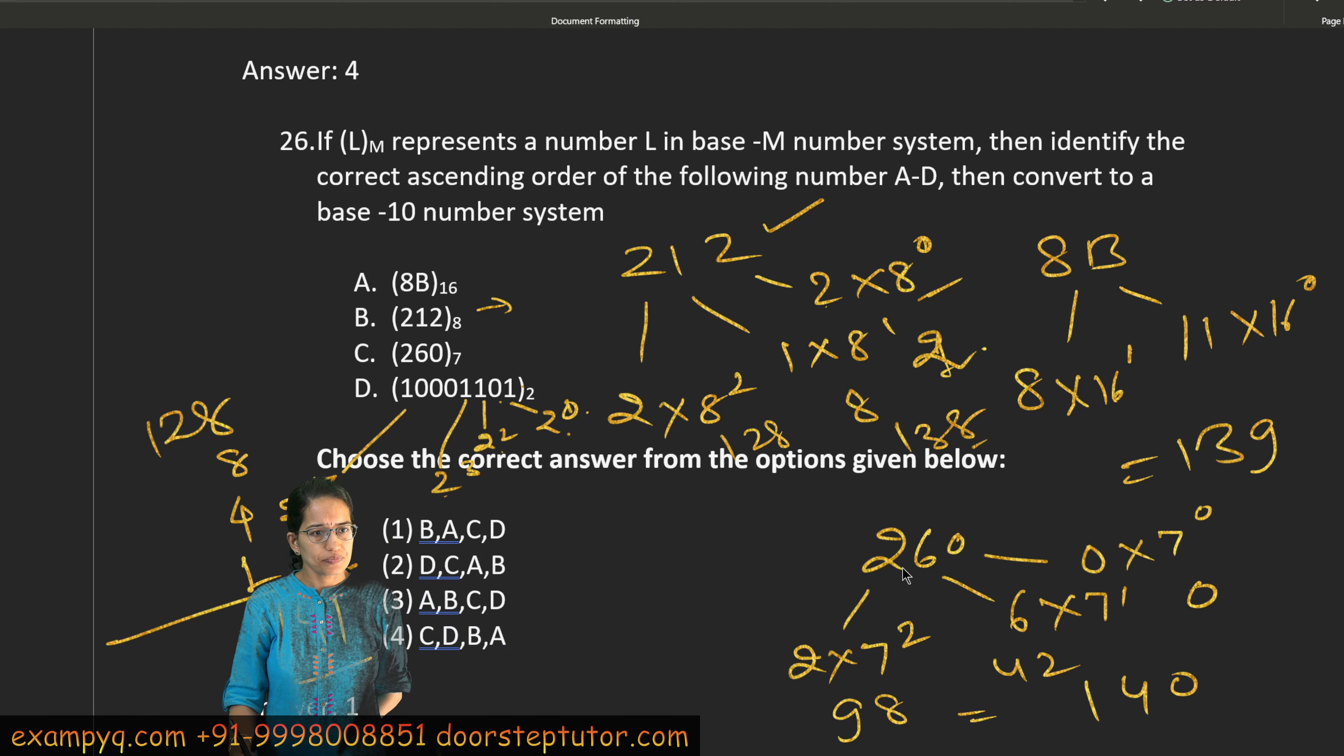Now you have to arrange in increasing order. So the lowest value is B at 138. After B, your next value is A at 139. Then C at 140 and D at 141. So B, A, C, D is the correct sequence here.